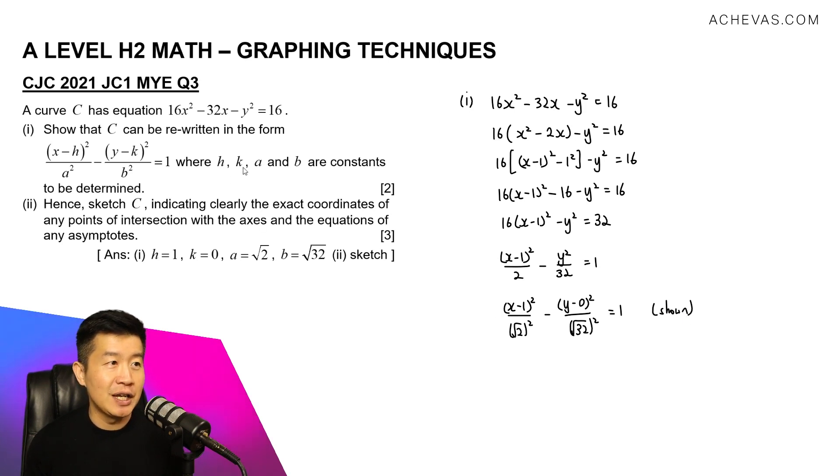We just need to write down the values for h, k, a, and b. h is this over here. According to what we have, h = 1. And k is this. According to what we have here, k = 0. And if I have to continue to compare, a = √2 and b = √32.